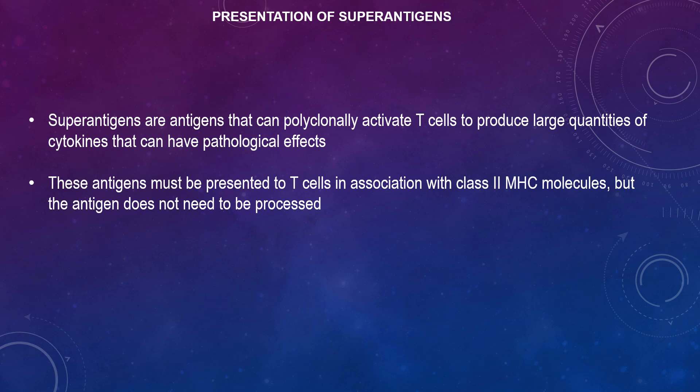Therefore, any T cell that uses a particular V-beta region in its TCR will be activated by a superantigen, resulting in activation of a large number of T cells. Each superantigen will bind to different numbers of V-beta regions.